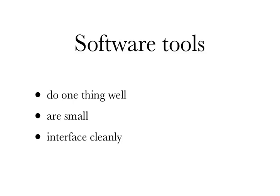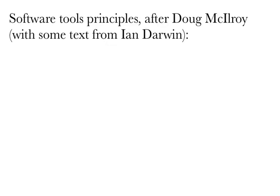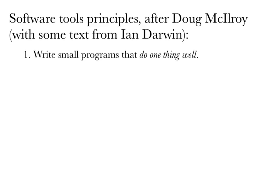We try to write programs which adhere to the software tools principles. Write small programs that do one thing well. The antonym of do one thing well would be do many things poorly, and we all know programs like that. We try to write programs that do one thing well.